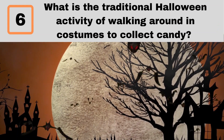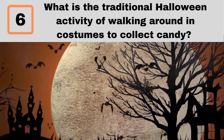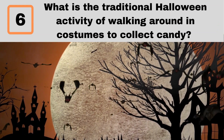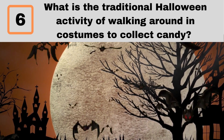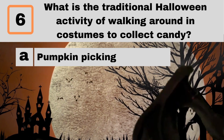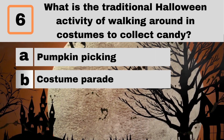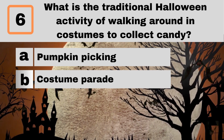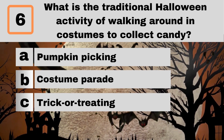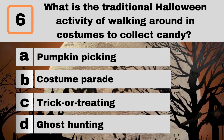Question 6. What is the traditional Halloween activity of walking around in costumes to collect candy? A. Pumpkin picking. B. Costume parade. C. Trick or treating. D. Ghost hunting.